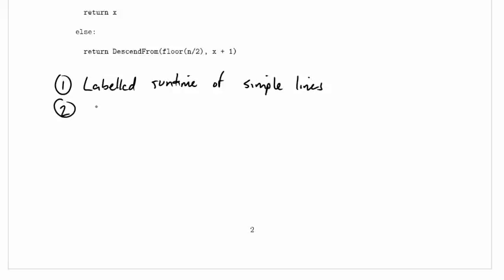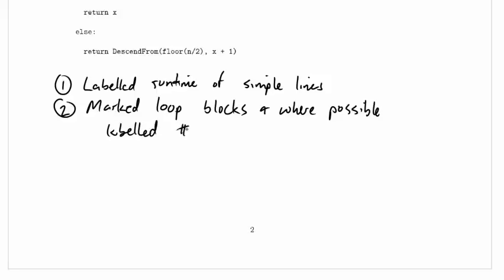We have labeled runtime of simple lines. We have marked loop blocks and where possible labeled number of iterations. Let me not say where possible. We did it where it was easy, right? So it was easy.